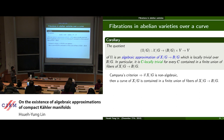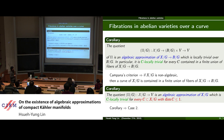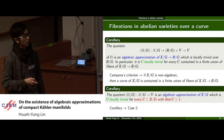Campana's criterion implies that if the total space X mod G is non-algebraic, then every curve in the total space is necessarily contained in the finite union of fibers of the fibration, since if a curve dominates the base, the total space is algebraically connected. So the quotient of the tautological family is an algebraic approximation of the quotient of the total space, which is C-locally trivial for every sub-variety of dimension less than or equal to one. This is exactly the statement needed for case two in the list.